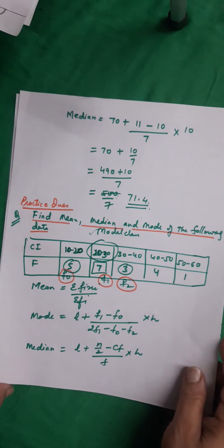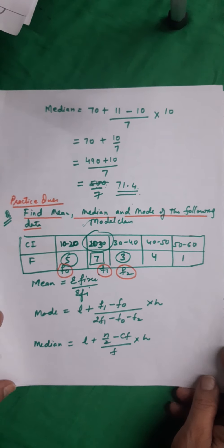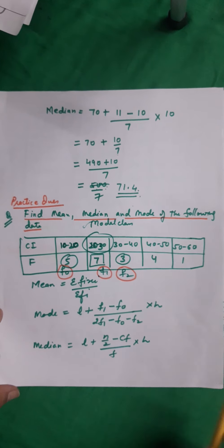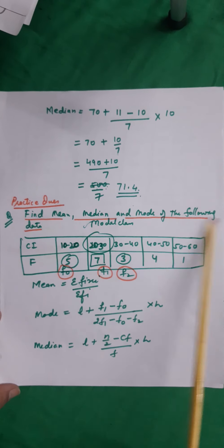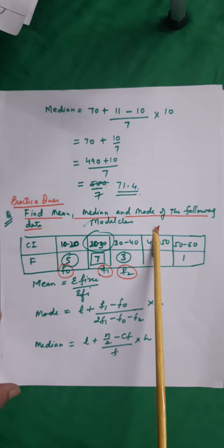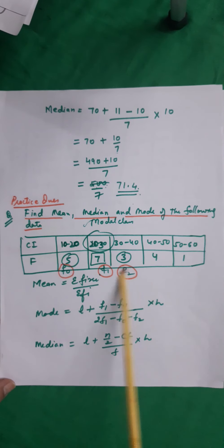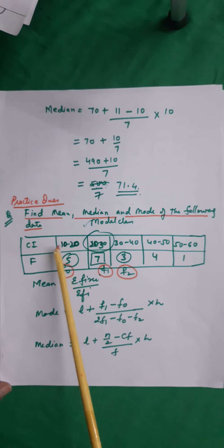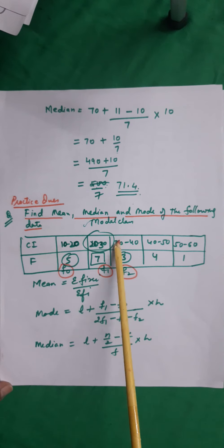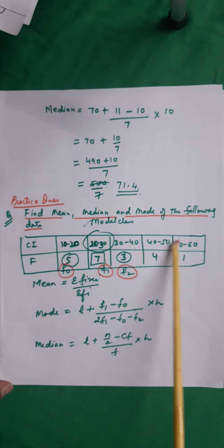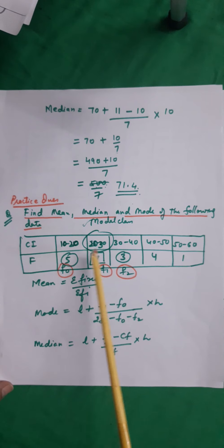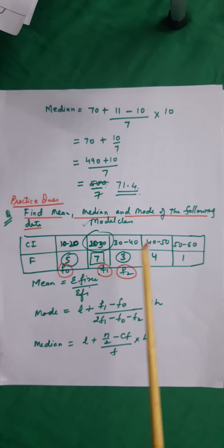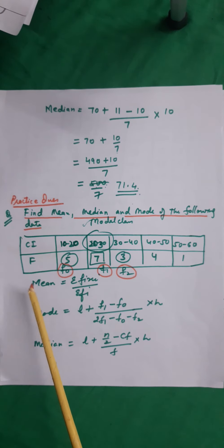Now let us find mean, median, and mode of the following data. Class intervals are 10–20, 20–30, 30–40, 40–50, and 50–60 with frequencies 5, 7, 3, 4, and 1 respectively.